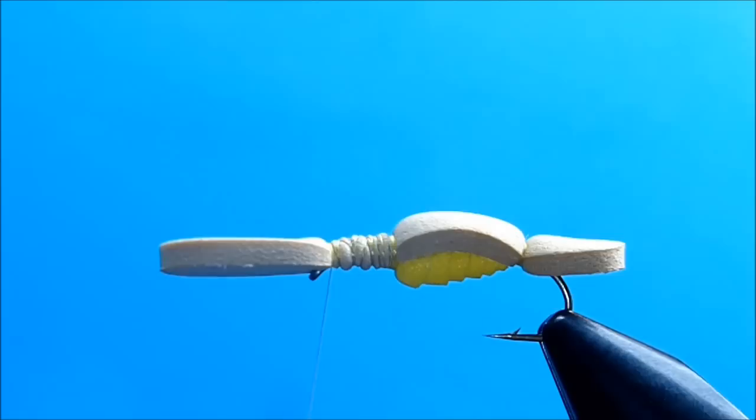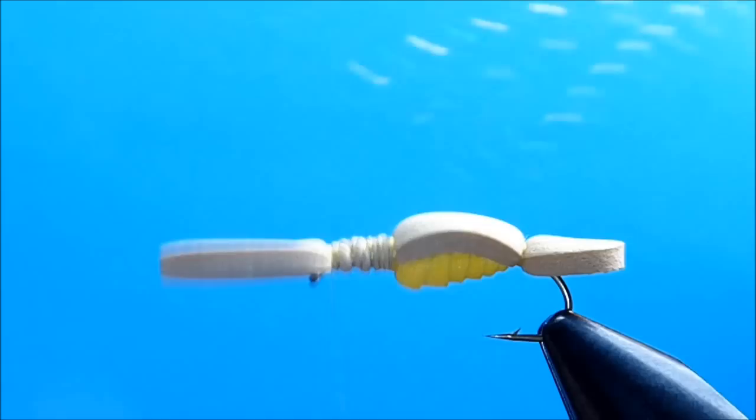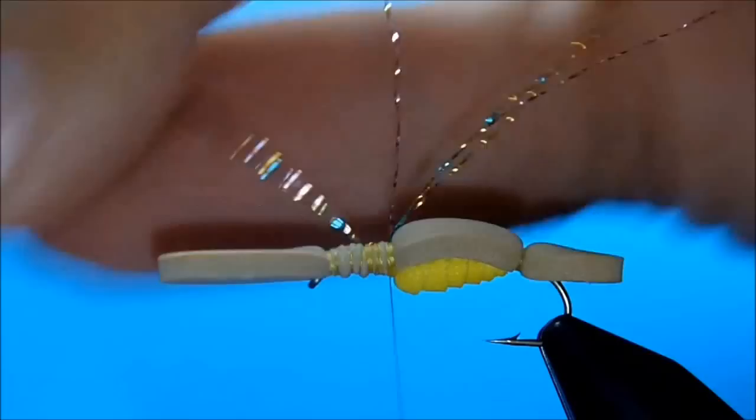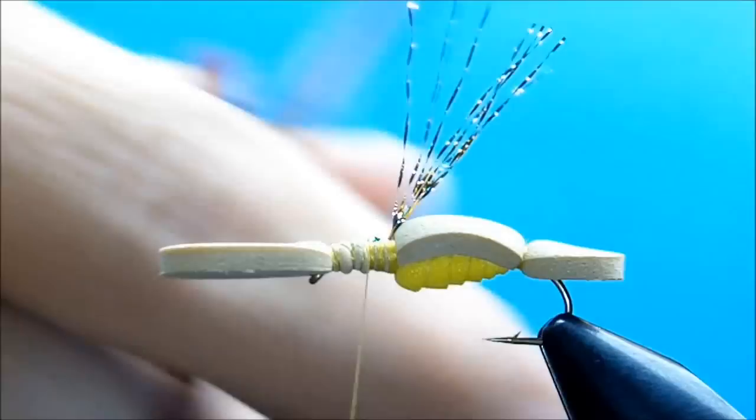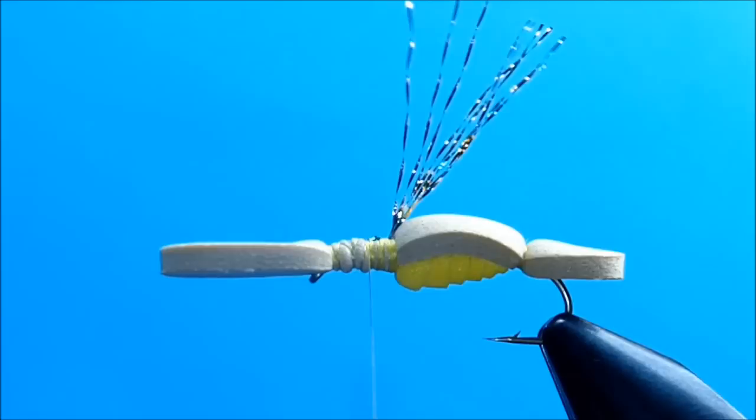Now we're going to grab our underwing, which is a few strands of rainbow crystal flash. I'm going to tie them in right about the middle of it, bind it back, and fold it back over. So take half as much as you want because you're going to be doubling it back. So we have our underwing.